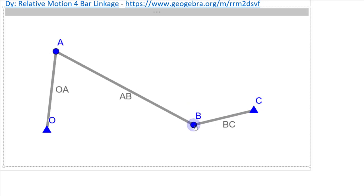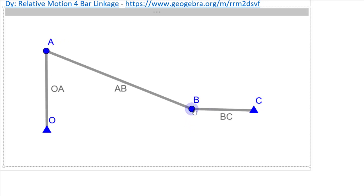So B goes down, A moves to the right, and we talked about that the relative velocity of B is going to be perpendicular here, so it's relative to point A, perpendicular to AB.